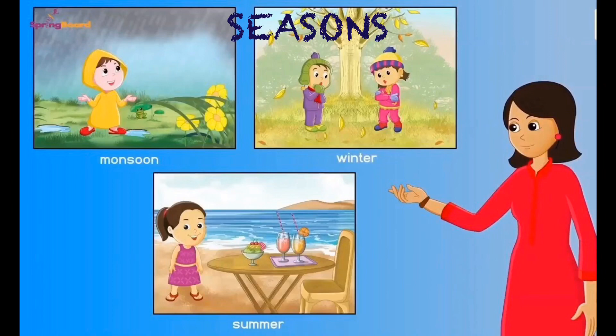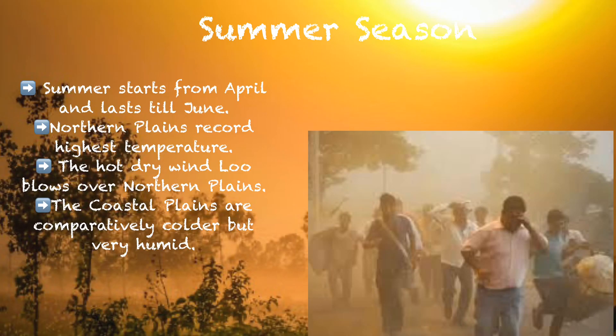The summer season starts in March or April and continues till May or June. In South India it starts becoming hot in March and stays hot till after May. In North India, summer starts in April and goes on till June and July. In summer it is very hot and dry in almost all parts of India except the mountains.